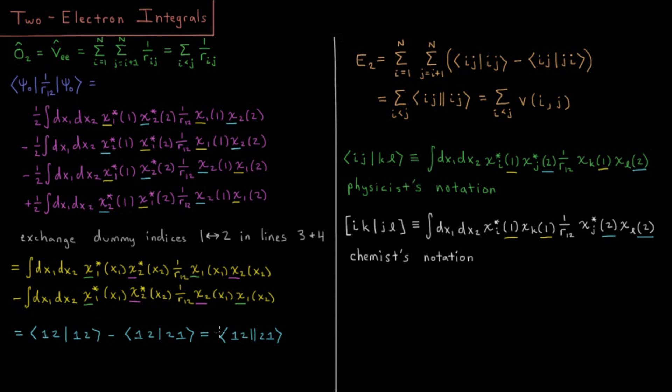According to this notation then, our two electron energy is going to be a pairwise sum. We are concerned with all pairs of electrons in the molecule from one to n. Pairwise sum of this first type of integral, ijij, and the second type of integral, ijji, where the first one is positive and the second one is negative. Or more succinctly, it's a pairwise sum of this ij double bar ij integral, which is also equal to a pairwise sum of what we might call the vij, or the electron potential between those two.